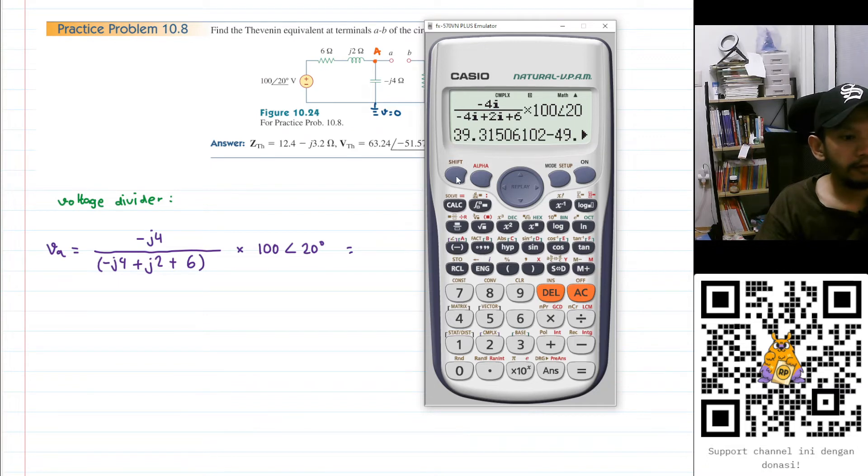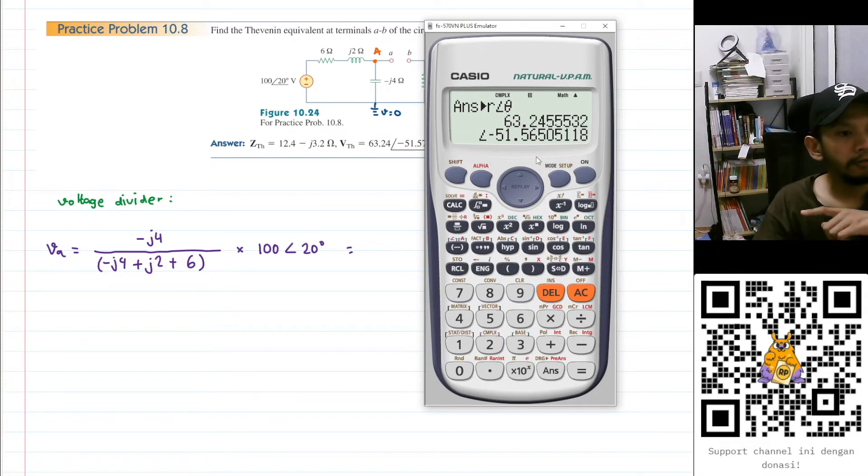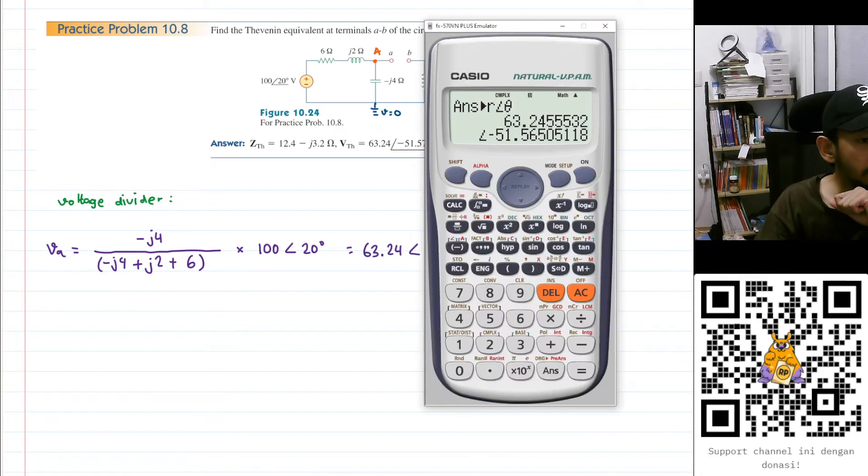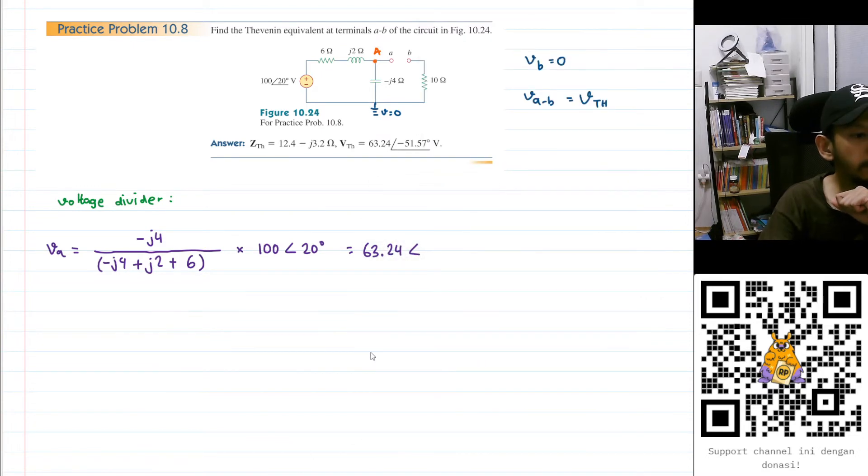Let's convert this into polar. I will have 63.24, and what is the angle? The angle will be minus 51.57 degrees, and the unit will be volt.